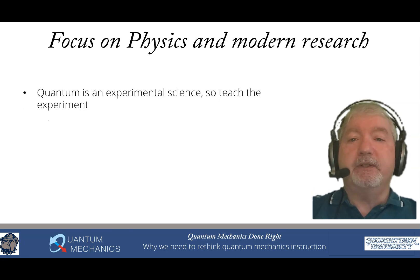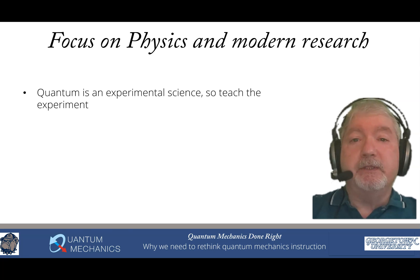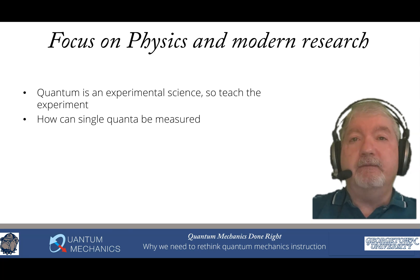We also want to focus on physics and modern research. Quantum is an experimental science, so we actually have to teach the experiment. For those of you who've taken a quantum mechanics course, let me ask you a simple question. Did you ever learn how to measure momentum? You probably learned that you can't measure position and momentum at the same time, which actually is not correct. You probably learned that when you talked about the uncertainty principle, but you were never told how you actually measure momentum. Don't you think that's odd? Don't you feel like maybe you were swindled in your quantum class? Well, in my book we show you how that's done and many other experiments as well. How can single quanta be measured? Have you even thought about this? What do I do if I want to measure something that's the smallest thing possible? How do I actually measure it? How do I get a detector that can actually probe something that is so small? This is a concept that you need to know if you're going to learn quantum mechanics.